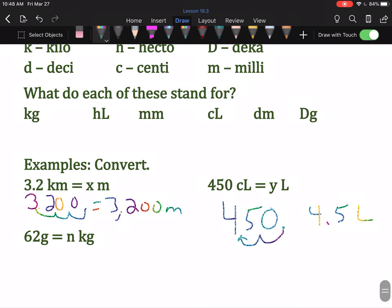So, down here, where is the decimal point in 62? It's at the end of it. Drag it one, two, three places back. And fill in the zero. That is .062 kilograms.